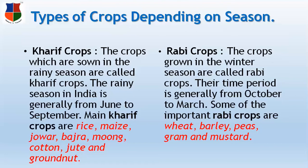Another type of crop is called Rabi crops. Rabi crops are grown in the winter season, and their time period is generally from October to March. Some important Rabi crops are wheat, barley, peas, gram and mustard. These crops are grown during these months.